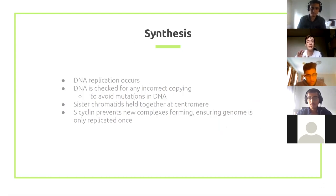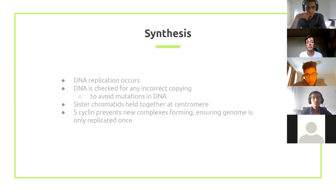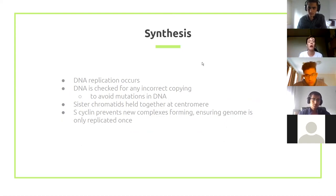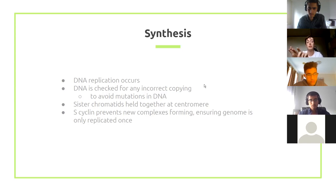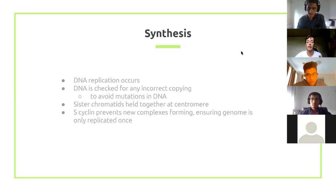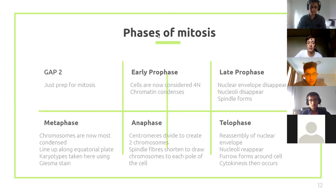S phase is where DNA replication occurs. If anything goes wrong, the cell enters apoptosis rather than continuing. During S phase, sister chromatids are held together at the centromere. S cyclin prevents new replication complexes from forming once DNA has been copied, ensuring the cell doesn't replicate its DNA more than once. G2 is essentially just preparation for mitosis.